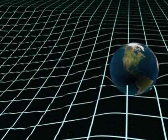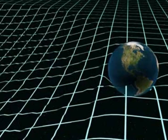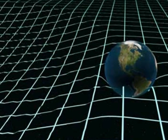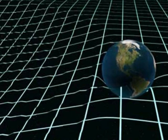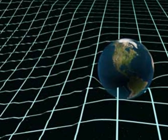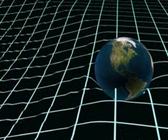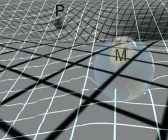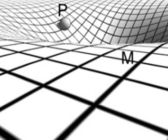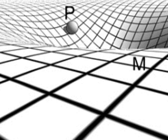Predicted in Einstein's General Theory of Relativity, gravitational waves are disturbances in the curvature of spacetime caused by the motions of matter. Propagating at or near the speed of light, gravitational waves don't really travel through spacetime — it's the fabric of spacetime itself that's oscillating. Although gravitational waves pass straight through matter, their strength weakens proportionally to the distance traveled from the source.